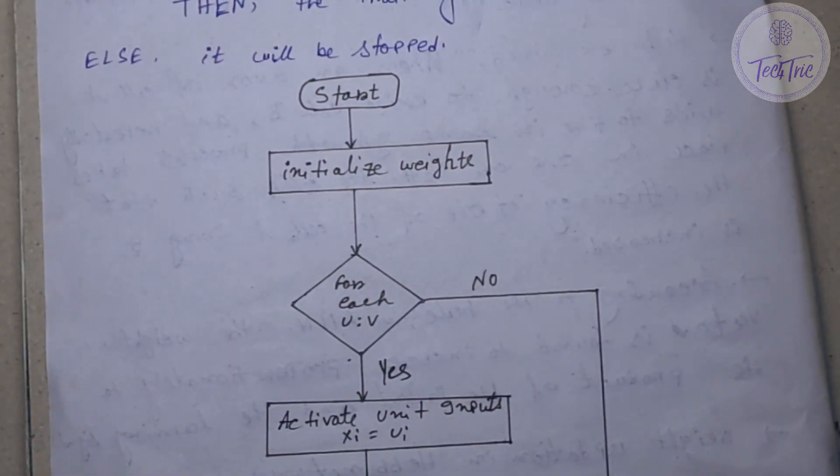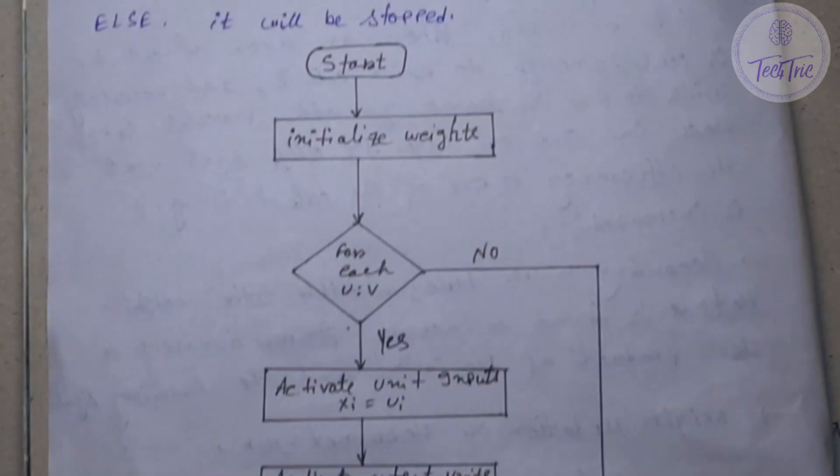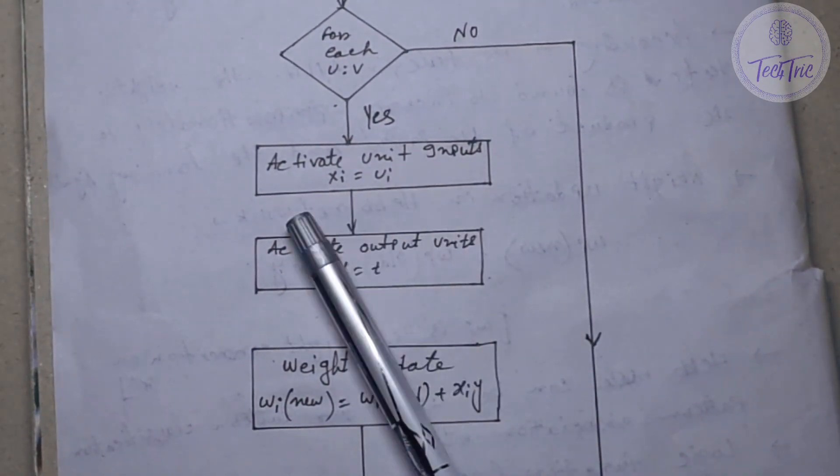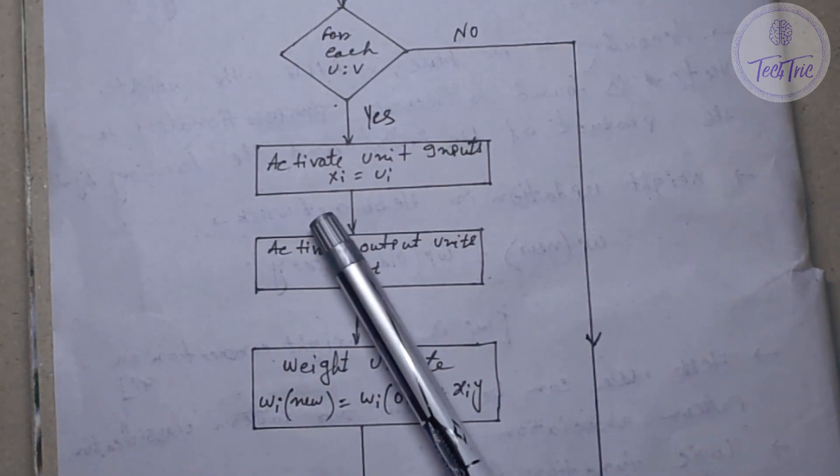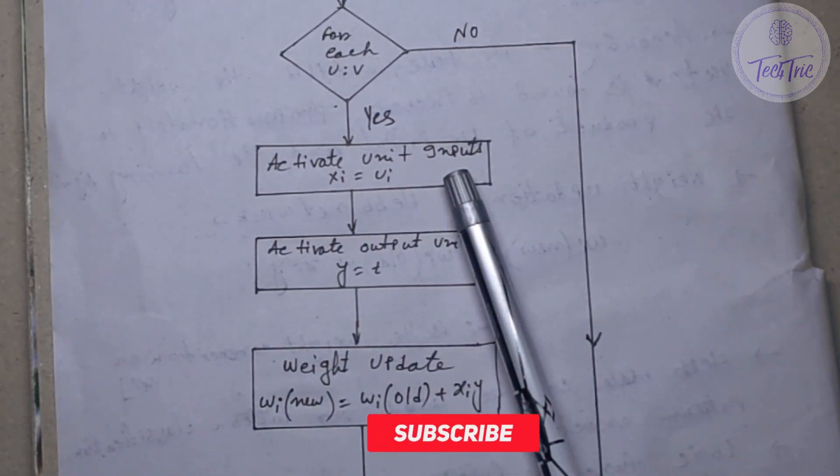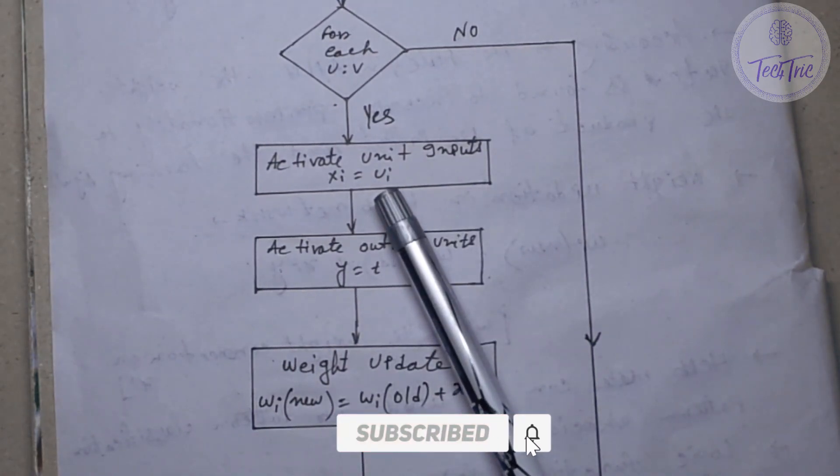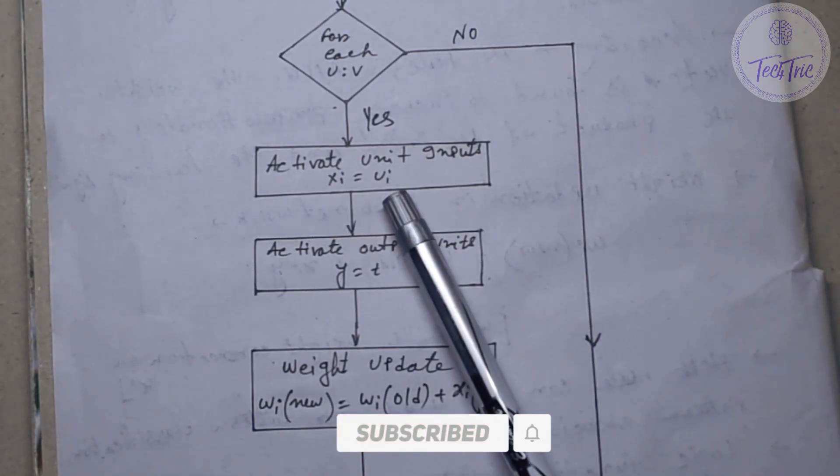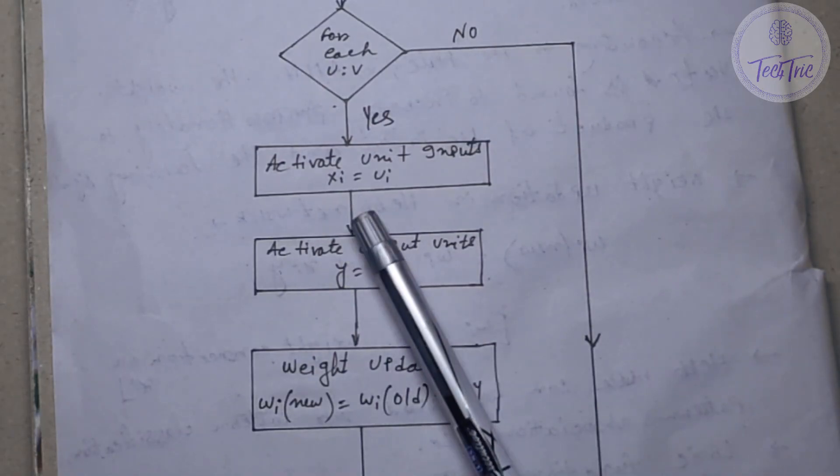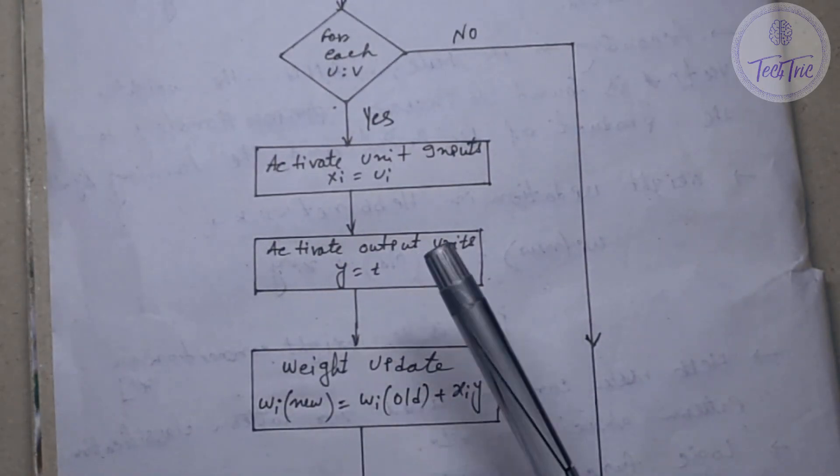Otherwise it will be stopped. For yes, first we have to add the activation function for inputs. We are using identity function, so U_i will be assigned to X_i. And then we have to add the activation function for output units. That is T will be assigned to U.